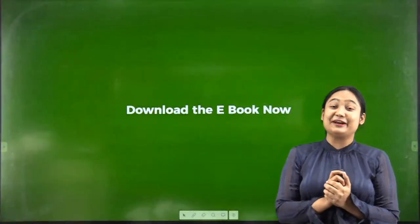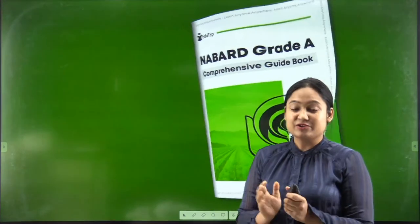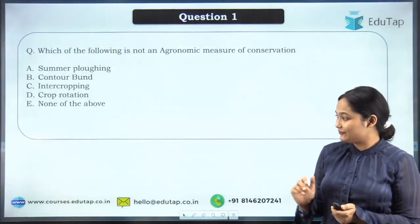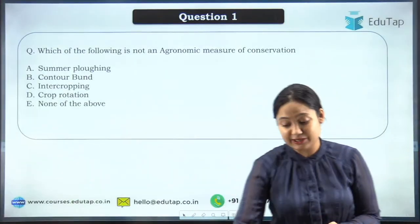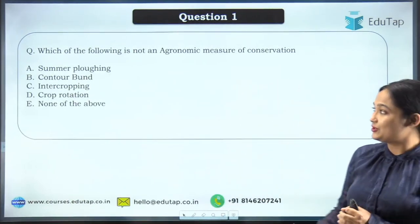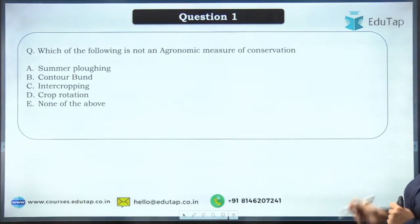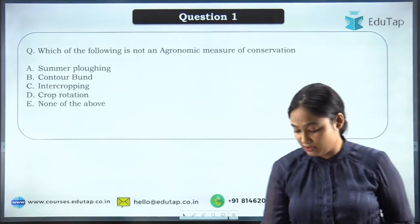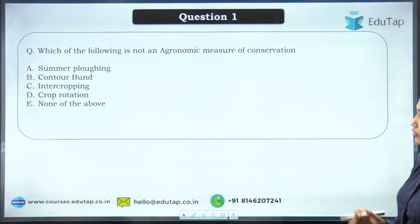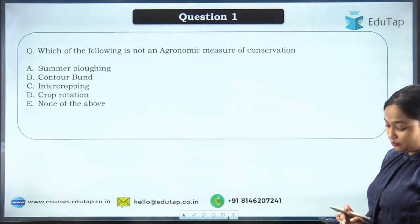Now let's move to today's topic — soil conservation. The first question is: which of the following is NOT an agronomical measure of conservation? The options are: summer plowing, contour bund, intercropping, or crop rotation.